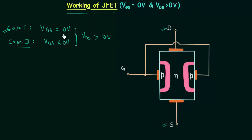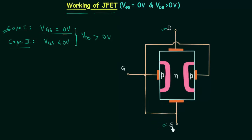In case number one, VGS is equal to zero volts. This means the potential of the gate terminal is the same as the potential of the source terminal, and the potential difference between gate and source is equal to zero volts. So I will connect the gate terminal with the source terminal. I will also connect the ground to the source — the potential of ground is equal to zero volts — so VGS is now equal to zero volts.